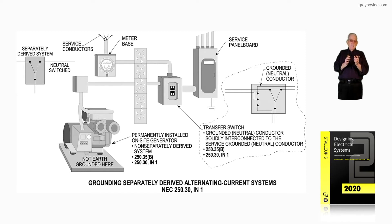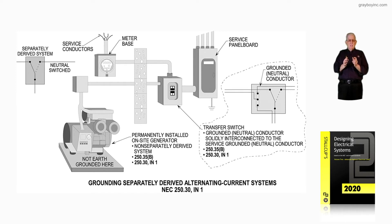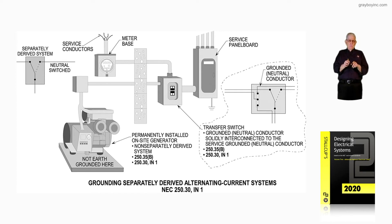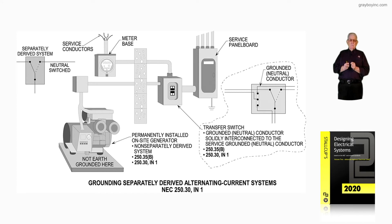However, if you could delete and have other systems feeding some of those emergency loads such as egress, emergency lighting, and that kind of thing, then you could classify it as a 701.2 informational note generator — that would be a legally required standby generator. And if you could remove some of those loads and serve them by other means, then you could classify it as an optional standby generator.